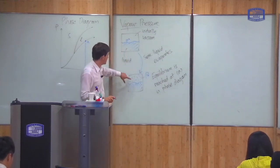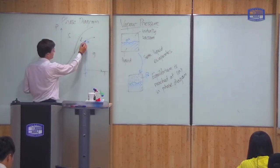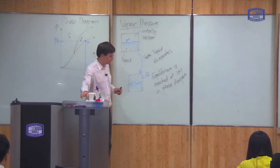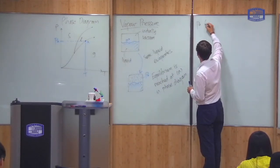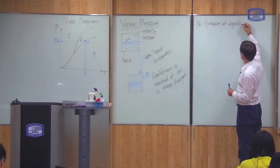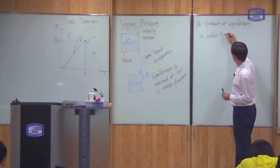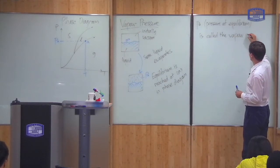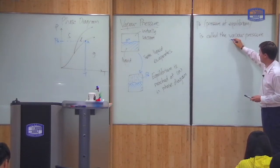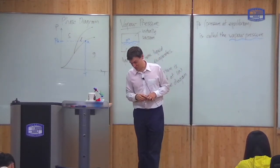Vapor pressure is simply the pressure at which equilibrium is reached — it's the pressure of the gas when it comes into equilibrium with the liquid. On the phase diagram, the vapor pressure P_A is just that: the pressure at equilibrium. So that simply defines the vapor pressure — it's the pressure at which gas and liquid will coexist.